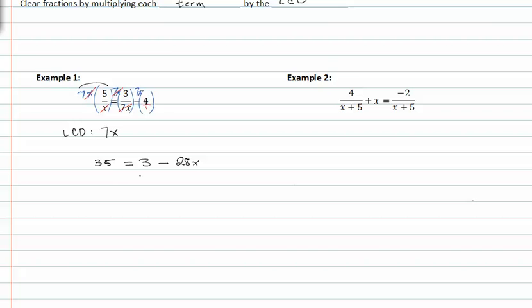From here we solve for x. Subtracting three from both sides, we get thirty-two is equal to negative twenty-eight x.